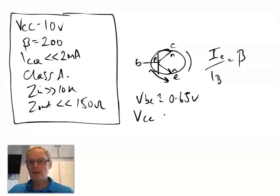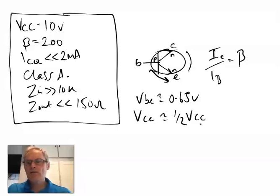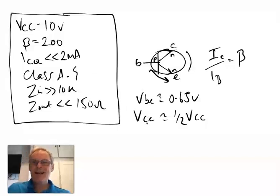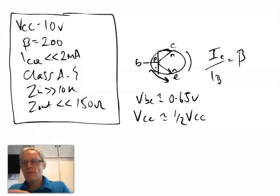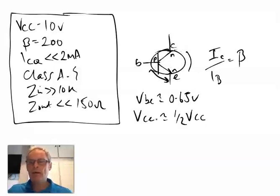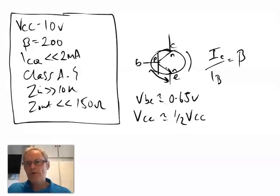The VCE — voltage across the transistor — can be anywhere we want depending on how we bias it, but ideally we want it sat at approximately half our supply rail. That's what we're aiming for in Class A operation. VCE_sat is specified in data sheets and bottoms out around 0.2 volts, but we're not operating in saturation or cutoff — we're operating in the active region.